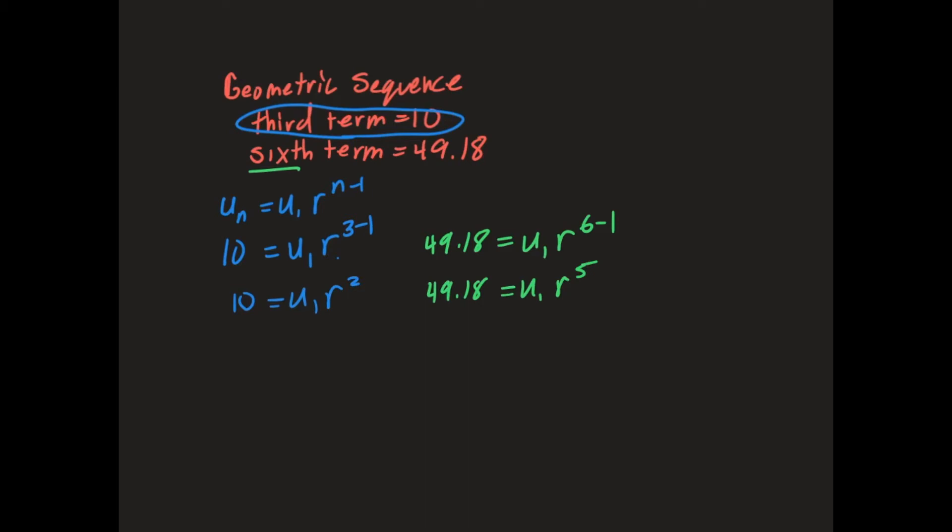Now, what we're going to do here is, if this is equal to this, and this is equal to this, then 10 divided by 49.18 should be equal to u1 R squared divided by u1 R to the fifth, because these two things are the same, and these two things are the same. So if I divide each side, basically I'm dividing both sides by the same thing.